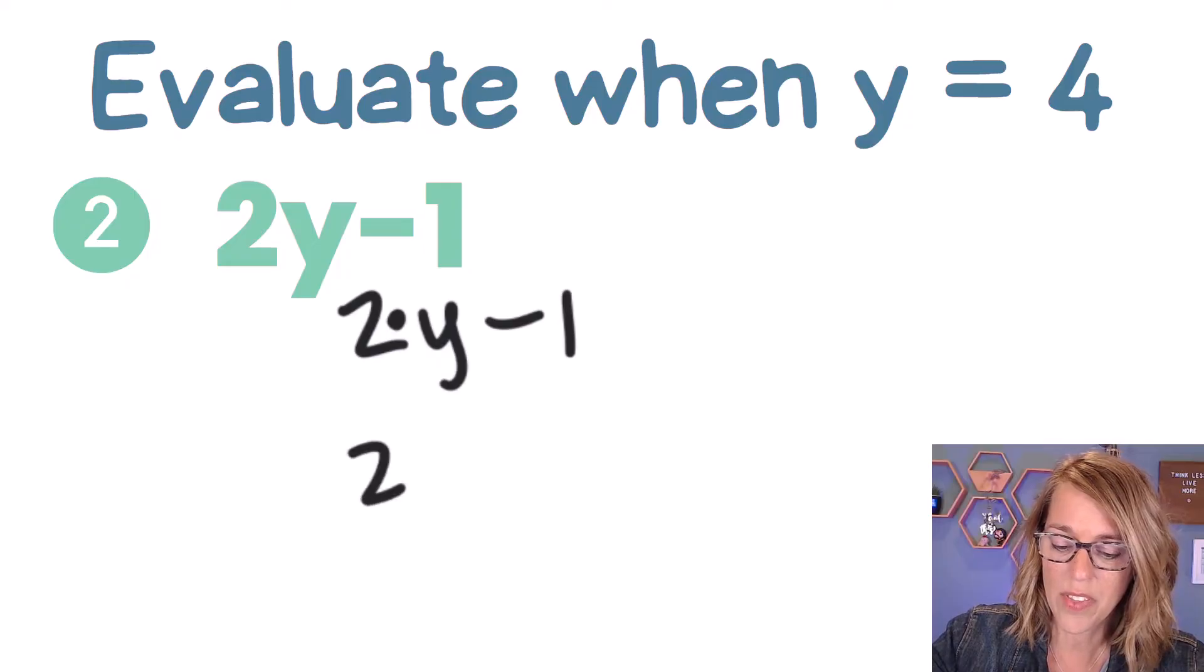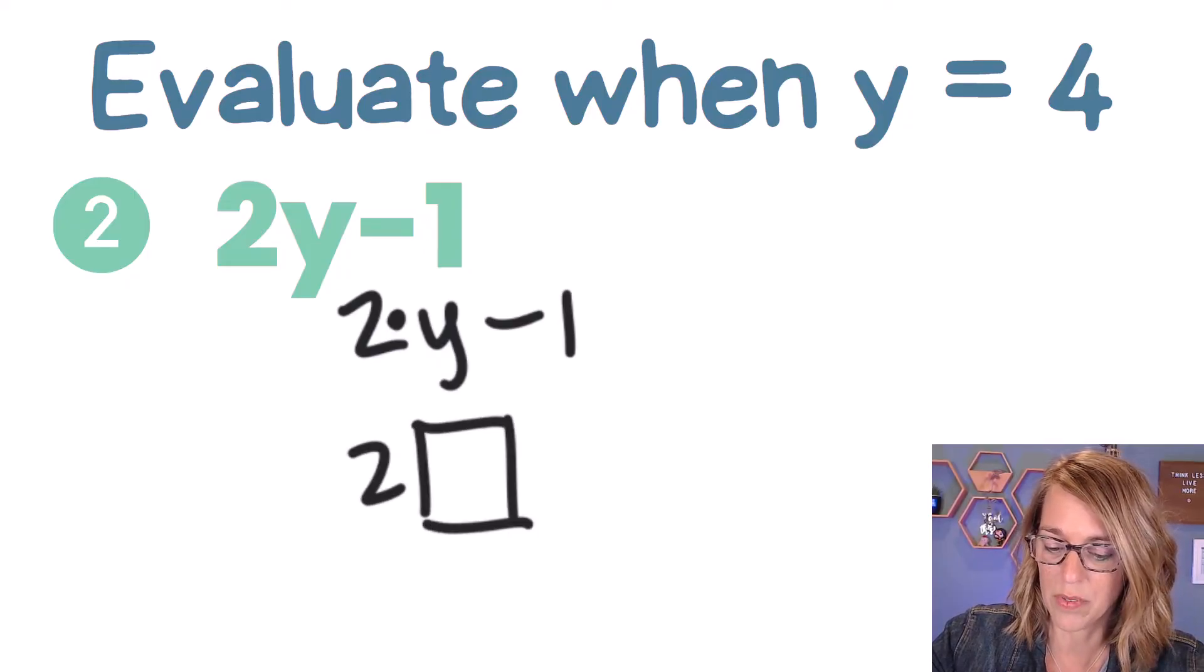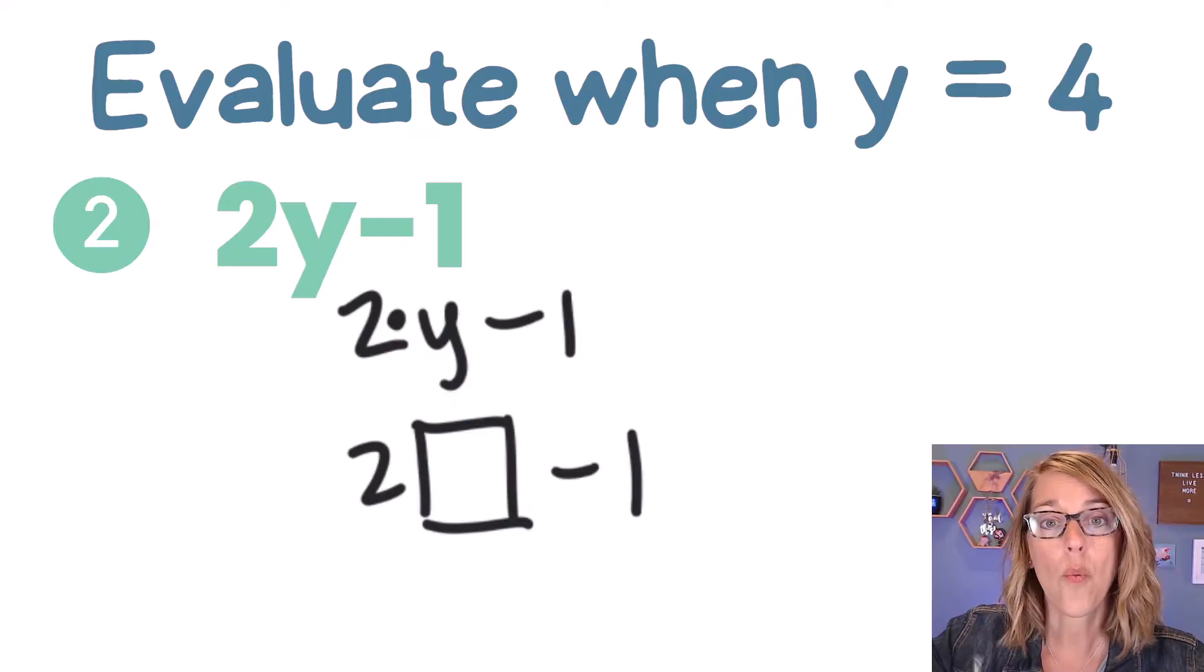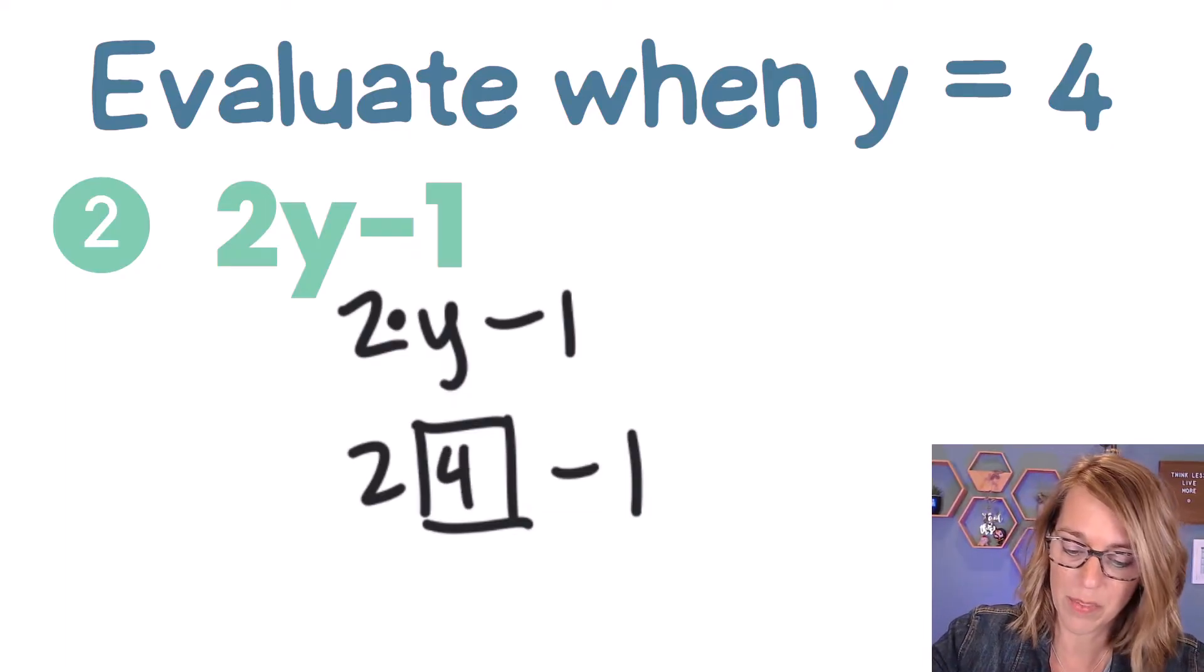Now I know that where that y is, I'm going to go ahead and put my value. So 2 times y, which is 4, minus 1. So this is multiplying.